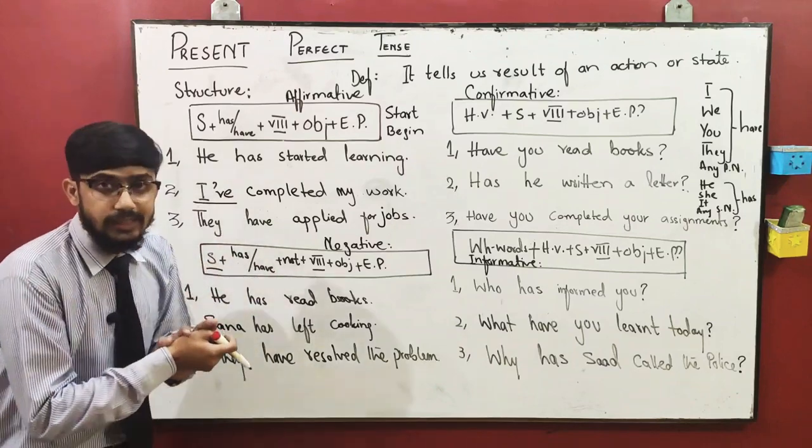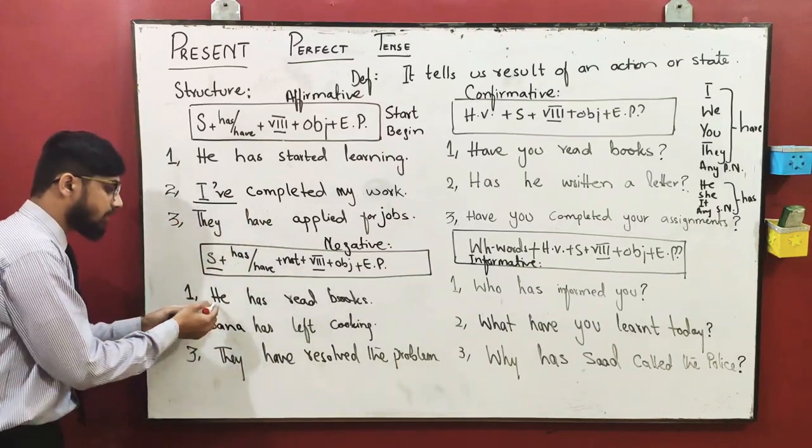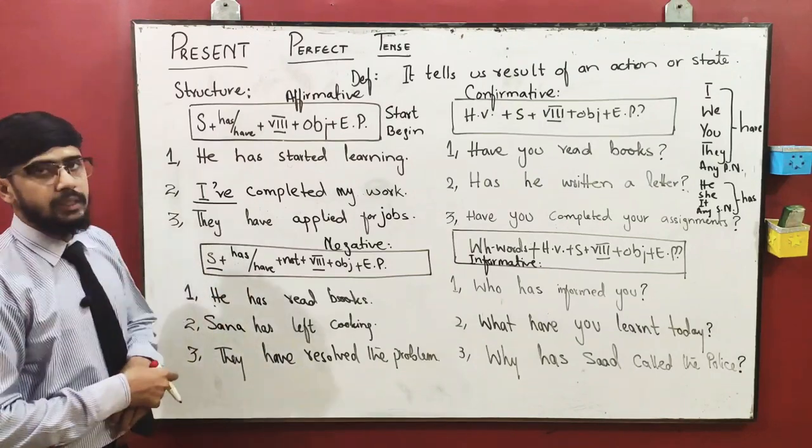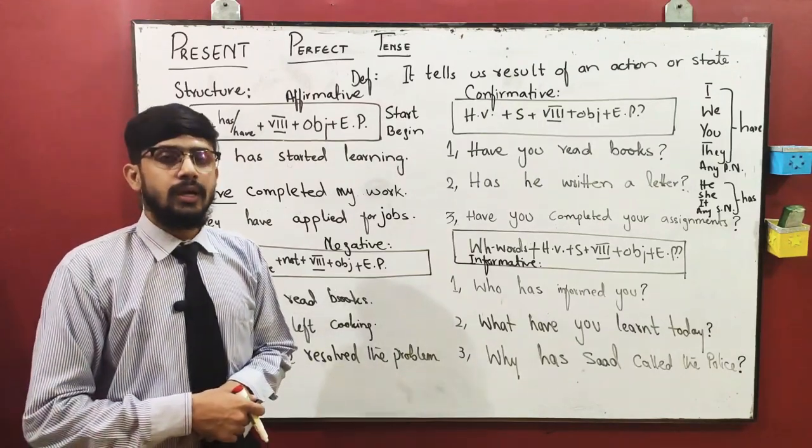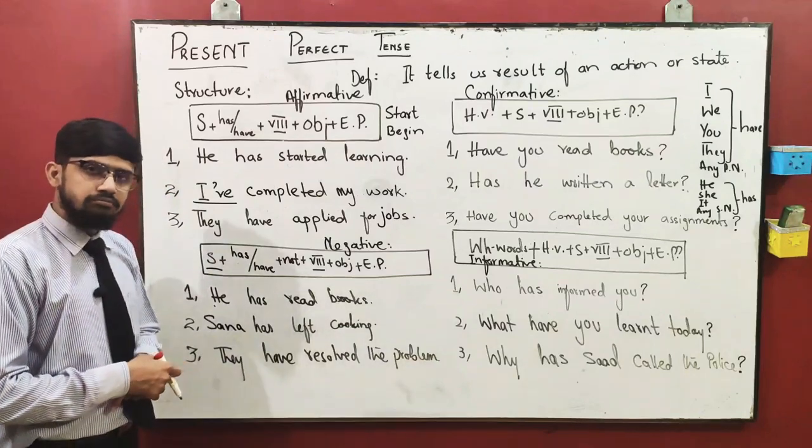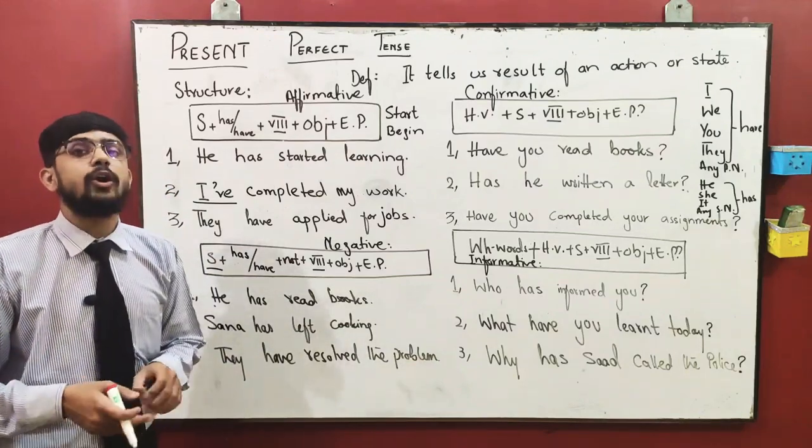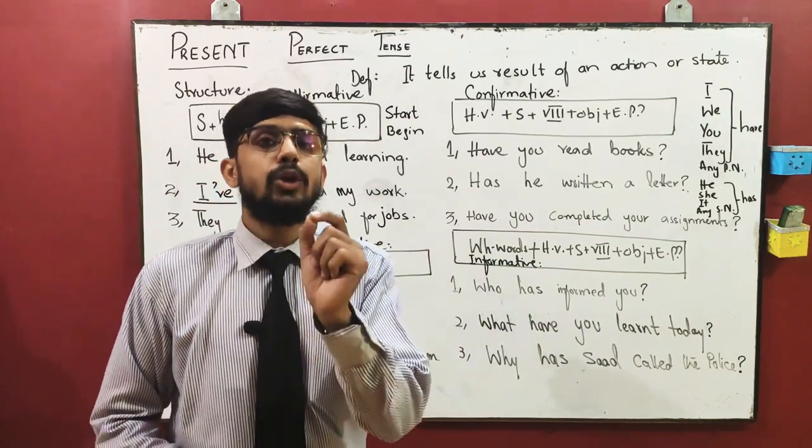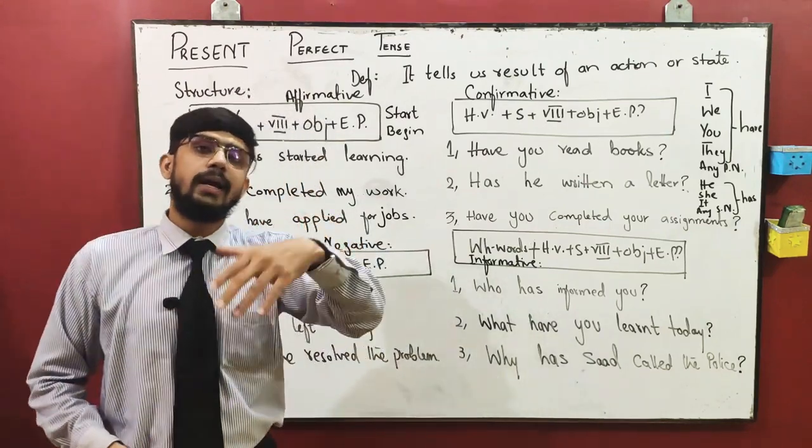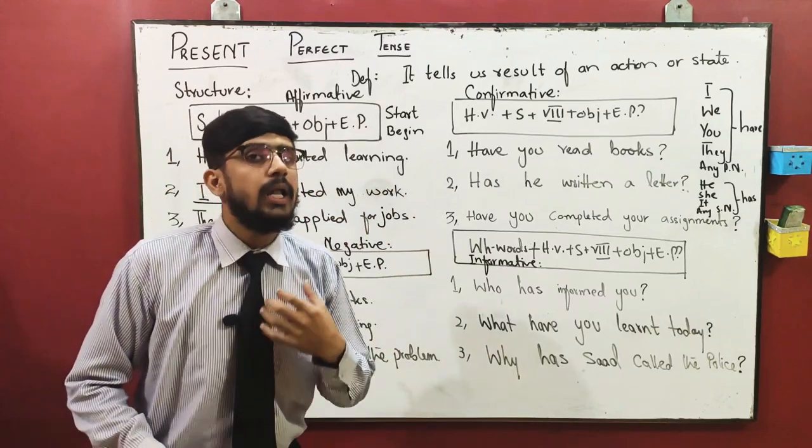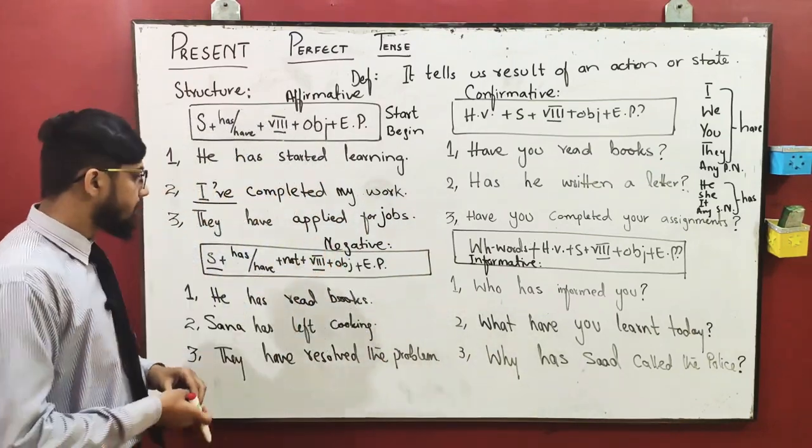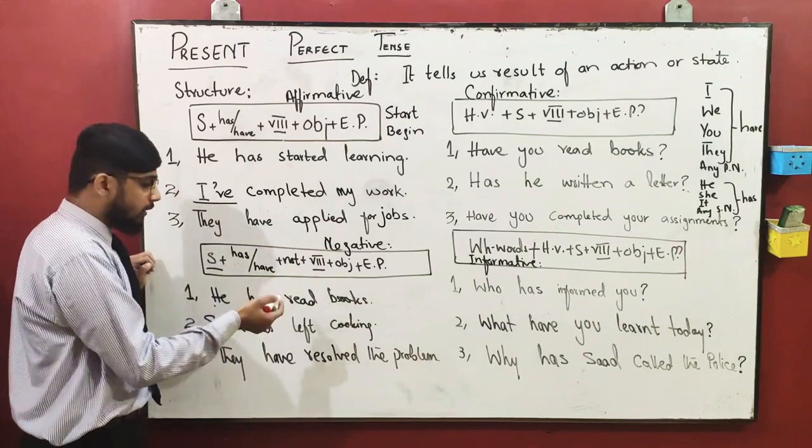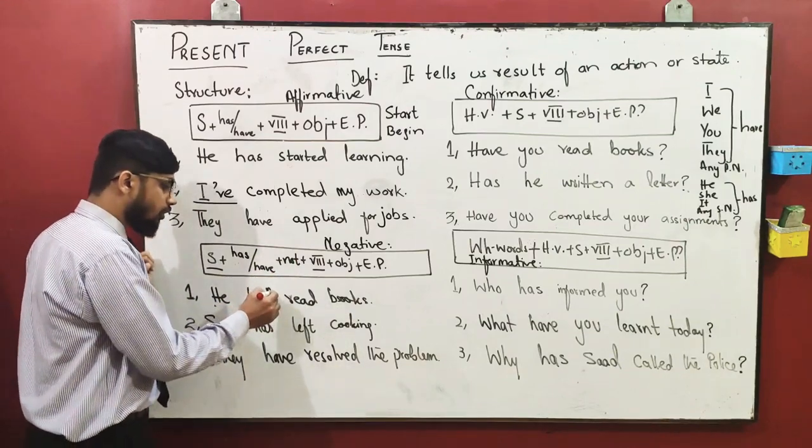The sentence is: he has read books. Is this a negative sentence? No, why? Because 'not' is not added. When you make a sentence negative, you have to add 'not' with the helping verb. So the helping verb we have is has and have. When we add not with it, it becomes: he has not read books.